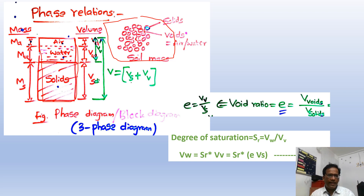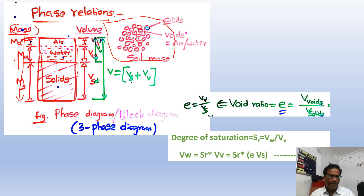The three components are: solids, water, and air. On the mass side, I am representing total mass of the soil with capital M, which includes mass of solids plus mass of water plus mass of air. In fact, mass of air is negligible, so mass of air is approximately zero.